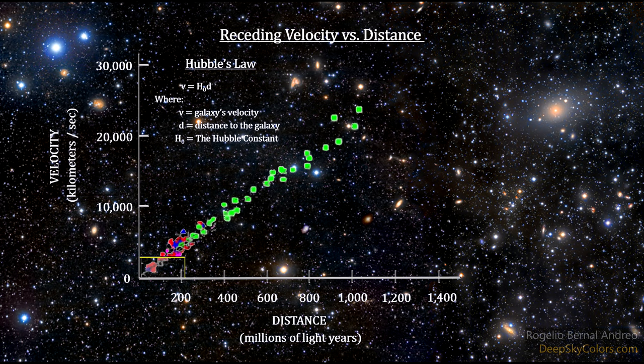The current best value for the Hubble constant using this approach is 22.4 kilometers per second per million light years, plus or minus 3.2. That's around 13 miles per second per million light years.